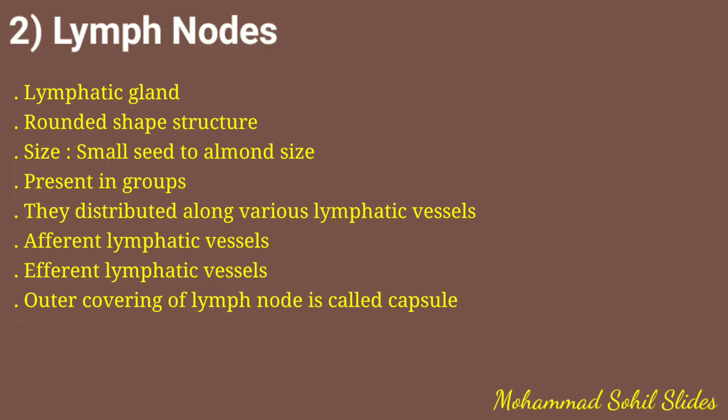The outer covering of the lymph node is called the capsule, which is made up of dense connective tissue. The inner foldings of the capsule form structures called trabeculae, which are extensions of the capsule that divide the node into compartments.